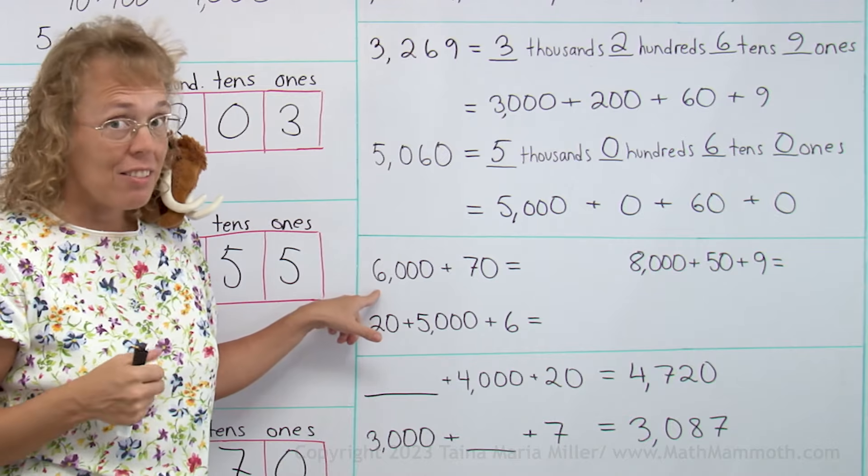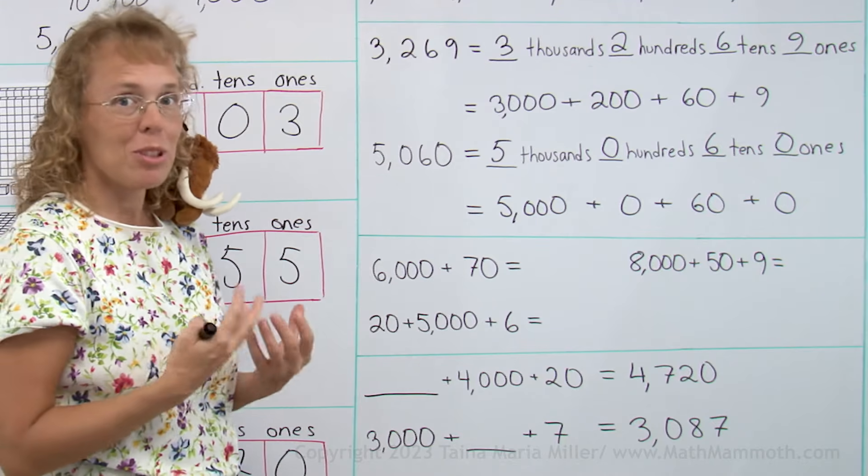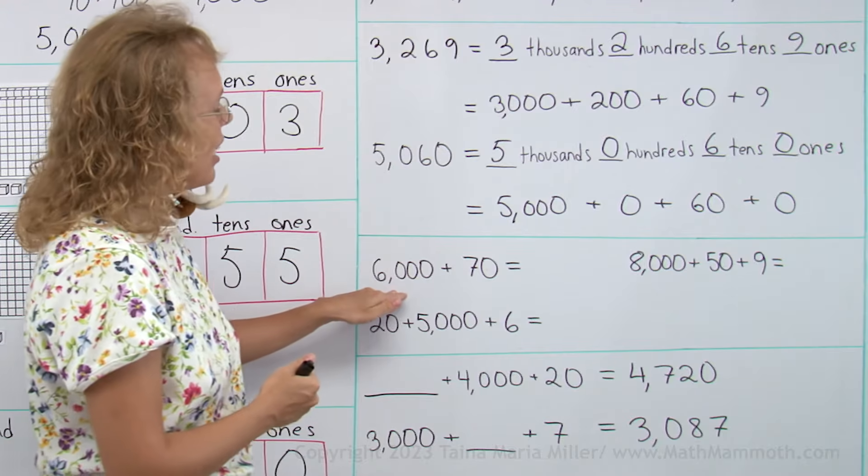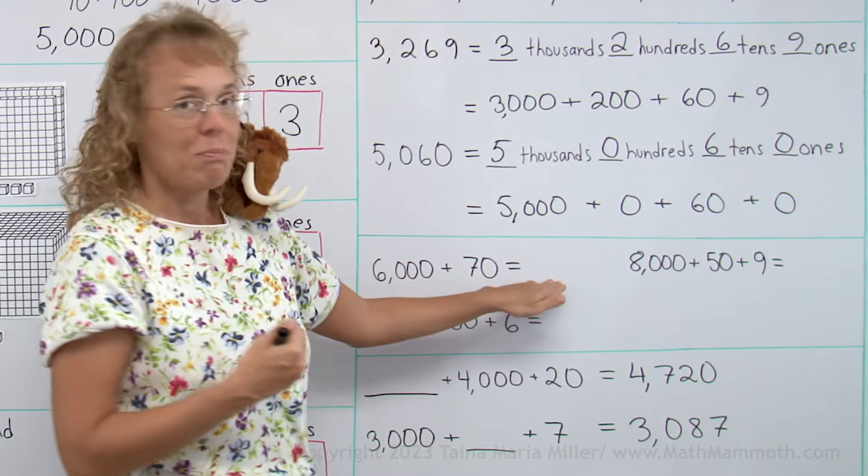Now over here I have some four-digit numbers, numbers with thousands that are written as sums, and we need to write them in the normal way.